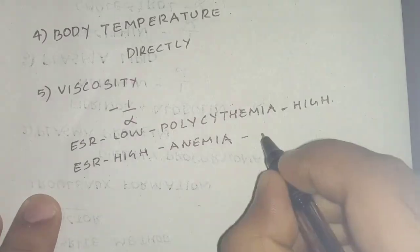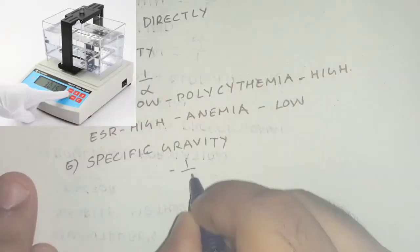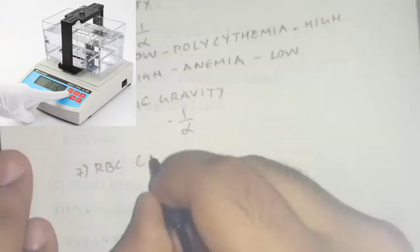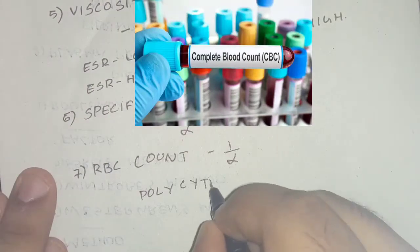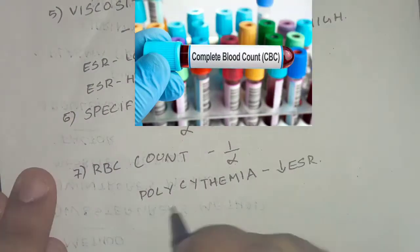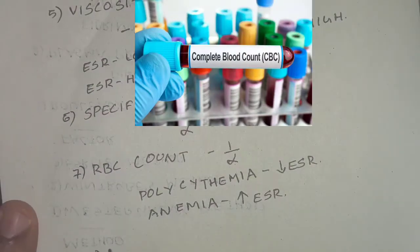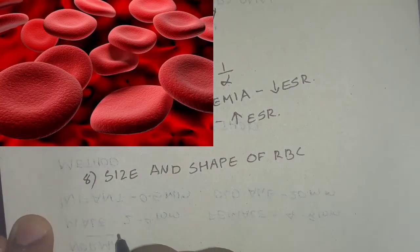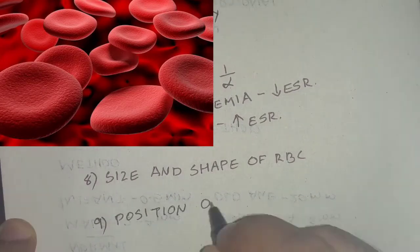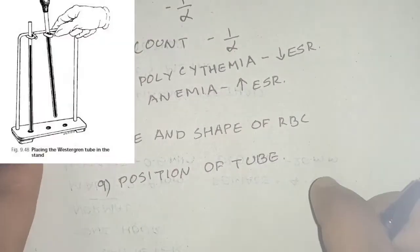ESR is low in polycythemia where viscosity is high, and ESR is high in anemia where viscosity is low. Specific gravity is inversely proportional to ESR. RBC count is also inversely proportional — polycythemia decreases ESR and anemia causes an increase in ESR.